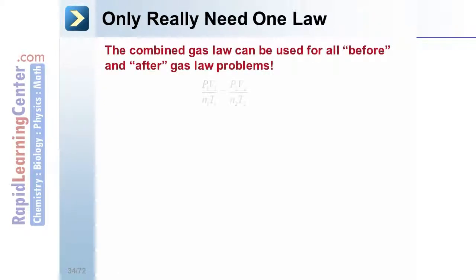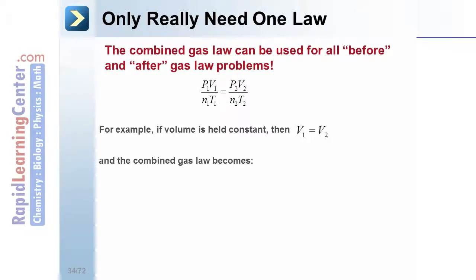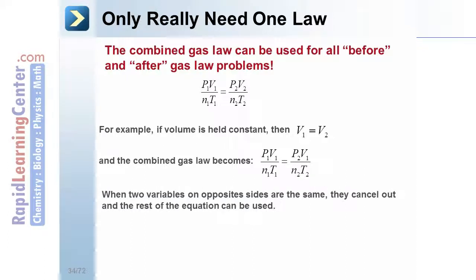Why remember four laws when you really just need one, the combined law? Whenever anything is held constant, such as V1 equaling V2, then the combined gas law can appear like this, where V1 is substituted for V2 on the right side. But when two variables on opposite sides are the same, they cancel out.